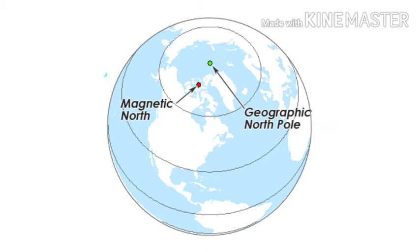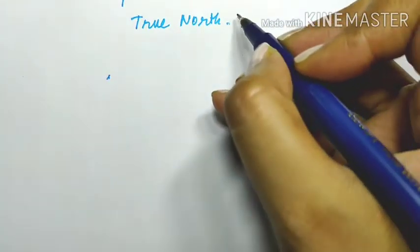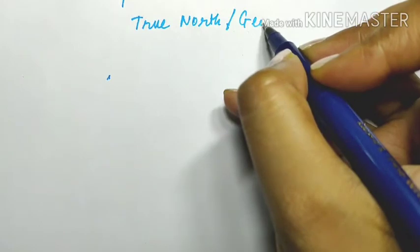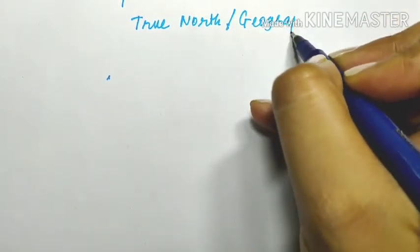In order to understand prismatic compass surveying, I need you to first understand some basic concepts. True north is also known as geographical north.